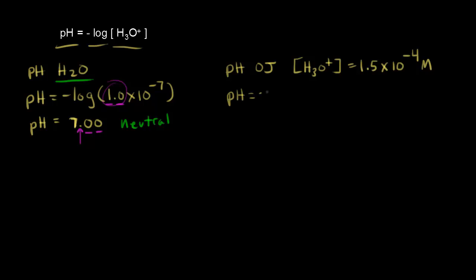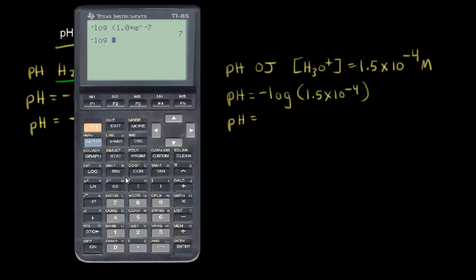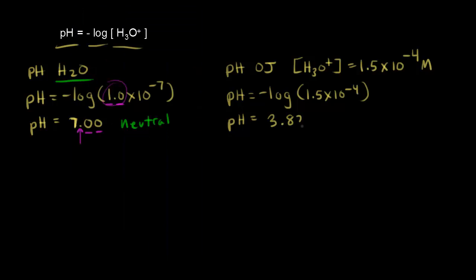So what is the pH of our orange juice solution? The pH is equal to the negative log of the concentration of our hydronium ion, which is 1.5 times 10 to the negative 4. Using the calculator: negative log of 1.5 times 10 to the negative 4 gives us 3.82. Writing 3.82 gives us two significant figures to the right of the decimal point, matching the two significant figures we had in our concentration.